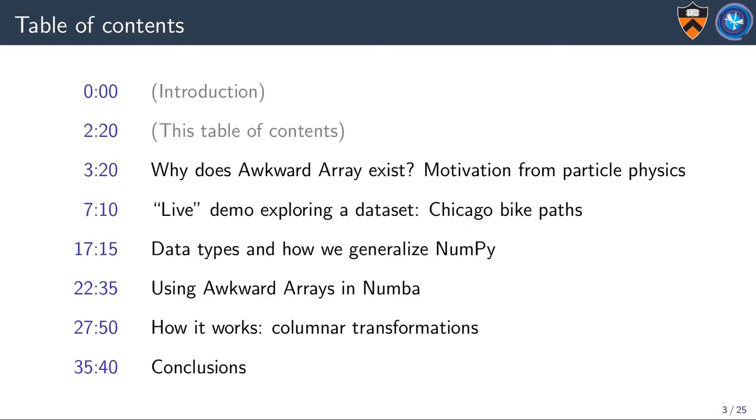Before moving on, I'd like to give a table of contents so that you can skip ahead or come back to different sections. First I'll be talking about why does this Awkward Array library exist, with motivation from particle physics. After that, I'll give a live demo exploring Chicago bike paths. Next, I'll present the scope of the library by talking about the data types. Then I'll talk about Awkward Arrays in Numba, the just-in-time compiler. Finally, I'll talk about how it works and the software architecture before finishing with conclusions.